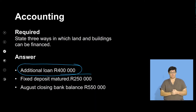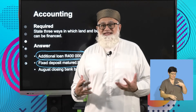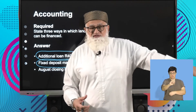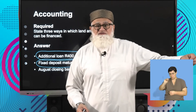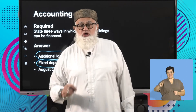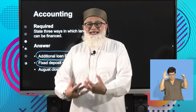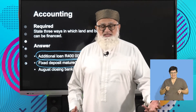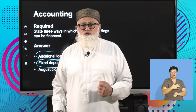Second, a fixed deposit has matured. With a fixed deposit, if we take money out of our bank and put it into a fixed deposit, that is regarded as a payment — money leaving our bank account. However, when a fixed deposit matures, you have money flowing back into our bank account, which appears as a receipt. The fixed deposit has matured, money is coming back — it's an inflow of cash and therefore shown as a receipt.